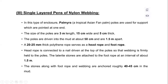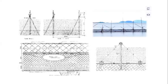In a single-layered pen with island webbing, tropical Asian palm poles are used for support, which are pointed at one end. The pole size should be three meters in length, 15 centimeters wide, and five centimeters thick. The poles are driven into the mud about 50 centimeters deep and are 1.5 meters apart. The polyethylene rope should be 20 to 25 mm thick and serves as a head rope and foot rope. The head rope is connected to a nail driven at the top of the pole so that the webbing is firmly held. Stones are attached to the foot rope at intervals of about 1.5 meters, and the webbing is anchored roughly 40 to 45 centimeters deep into the mud.